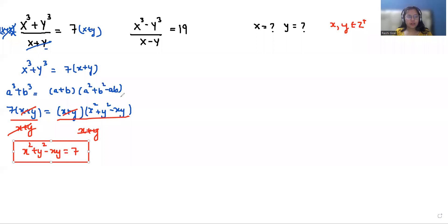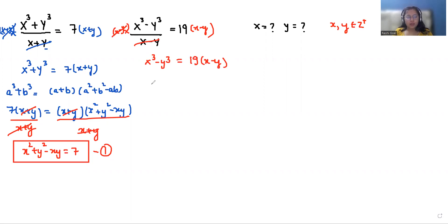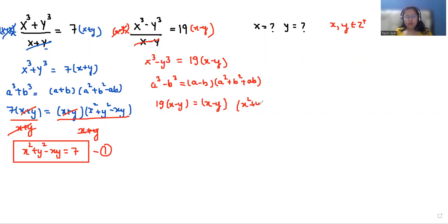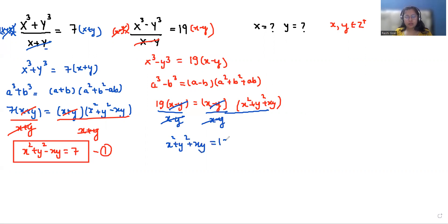I'm considering this as equation number 5. Now coming to the second equation, we can write x cubed minus y cubed. If I multiply both sides by x minus y, we can eliminate this, so x cubed minus y cubed equals 19 times x minus y. We use the identity: a cubed minus b cubed equals a minus b times a squared plus b squared plus ab. So x squared plus y squared plus xy equals 19. I'm considering this as equation number 6.